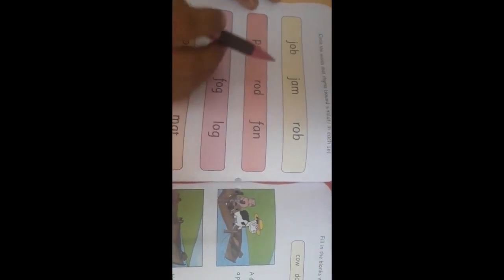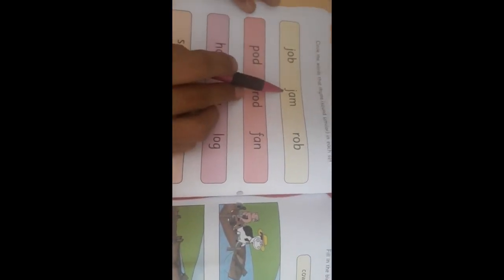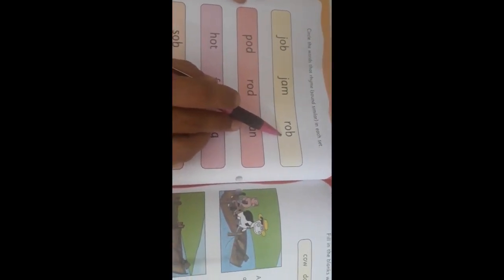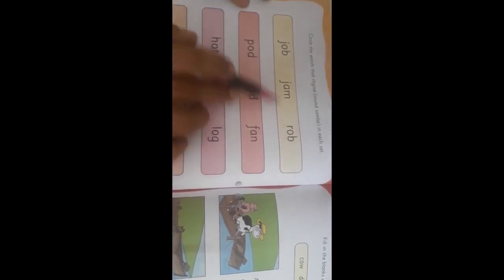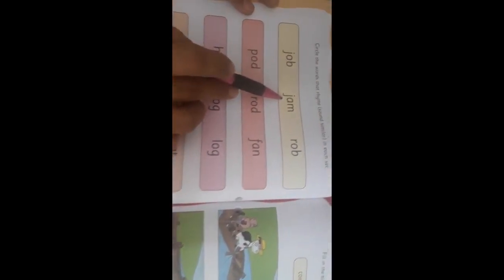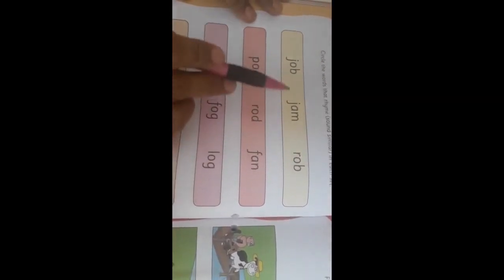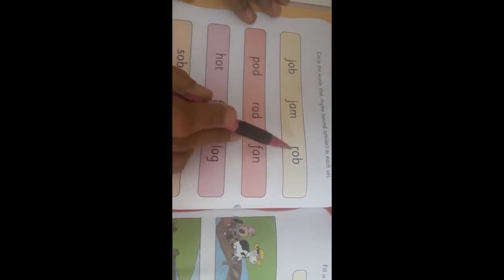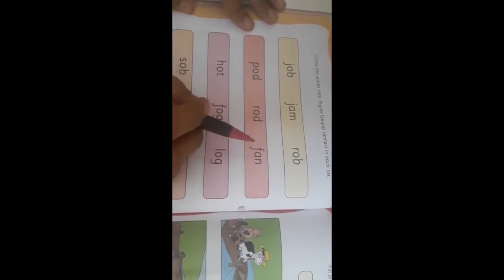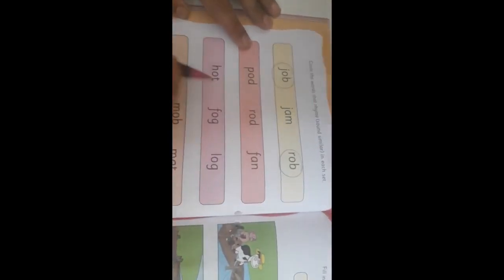For example here, what is this? J-OB, job. J-AM, jam. And R-OB, rob. Now tell me, which two words are rhyming? Is it rhyming with jam? Job and jam, is it rhyming? No. Now we will see rob. Job, rob. Is it rhyming? Yes, it is rhyming. So we are going to circle job and rob.